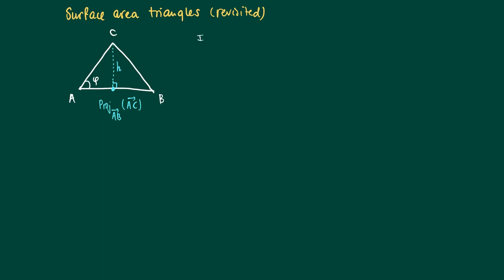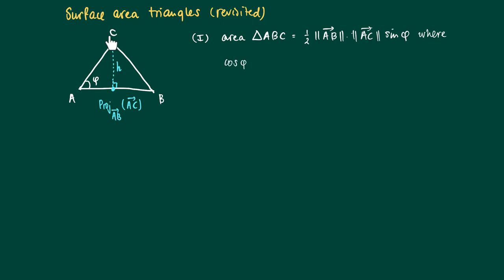At least if we know the coordinates of these points, we can calculate the area of triangle ABC as one half times the length of AB, times the length of AC, times the sine of phi. AC times sine of phi is no more than H, the height. And the cosine of phi is defined as the inner product of AB and AC, divided by the length of AB times the length of AC.